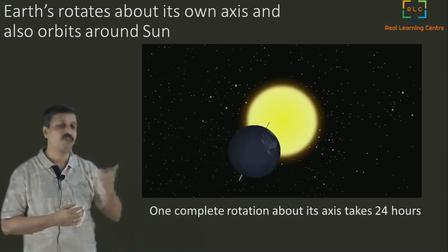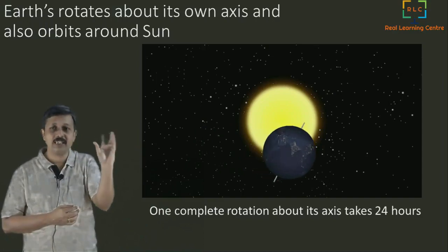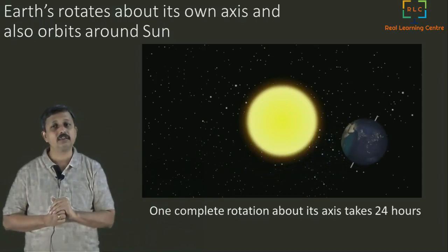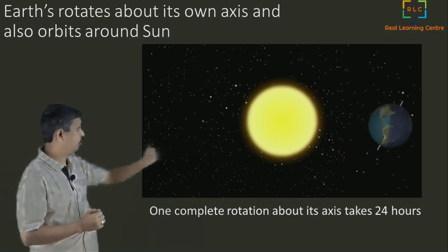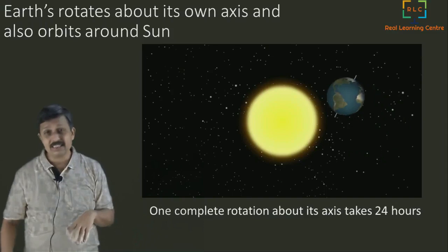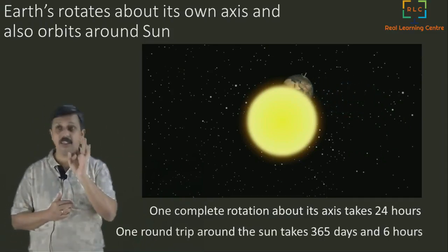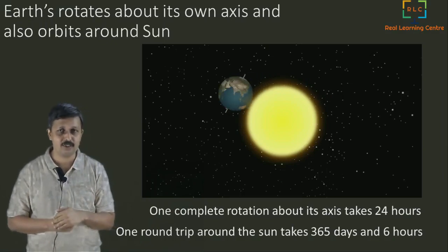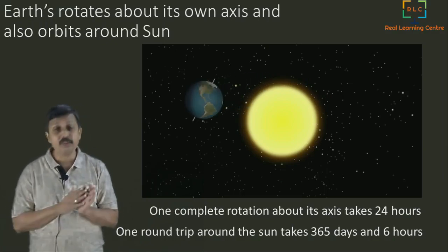One complete rotation of its axis takes about 24 hours. One time to rotate around its own axis takes 24 hours, and to go around the Sun in one full round trip basically takes about 365 days and 6 hours, not just 365 days.